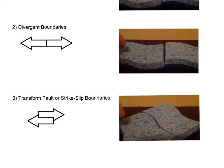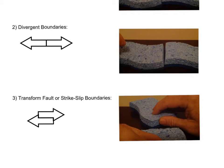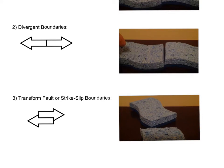Transform fault or strike-slip fault boundaries — also shown in the sponge video — are where plates slide by each other. As they slide, they get stuck, and when they release all that energy, earthquakes occur and faults are formed along transform and strike-slip fault boundaries. One of the most well-known faults in the United States is the San Andreas Fault, where the Pacific Plate is sliding past the North American Plate. Notable earthquakes along the San Andreas Fault include the 1906 San Francisco earthquake, the 1940 Imperial Valley earthquake, and the 1989 Loma Prieta earthquake.